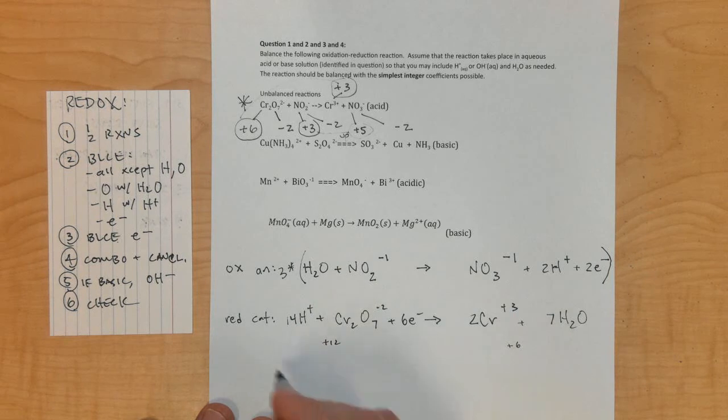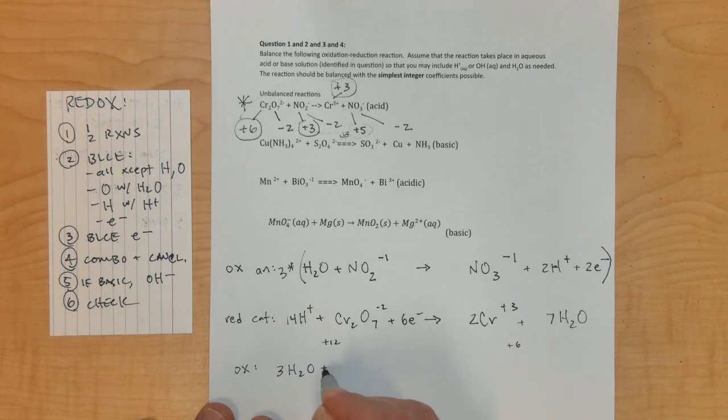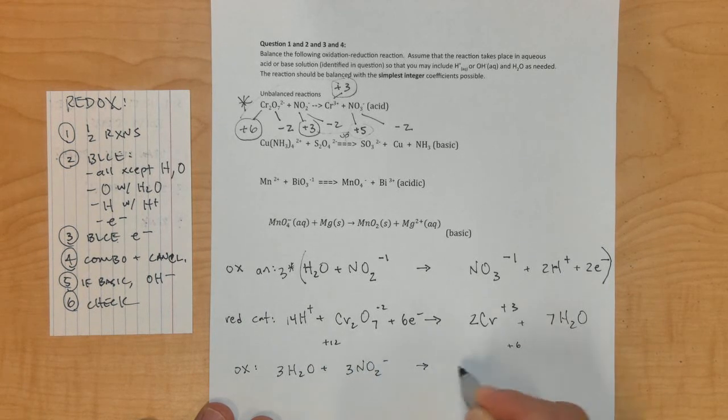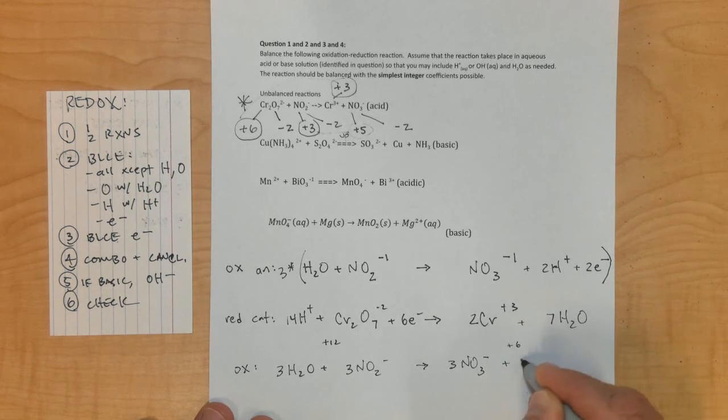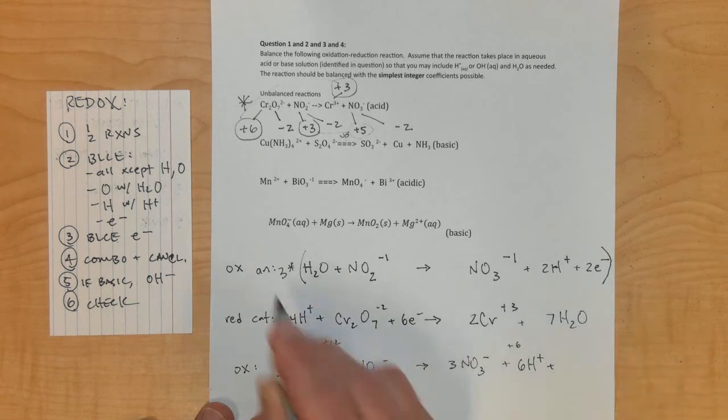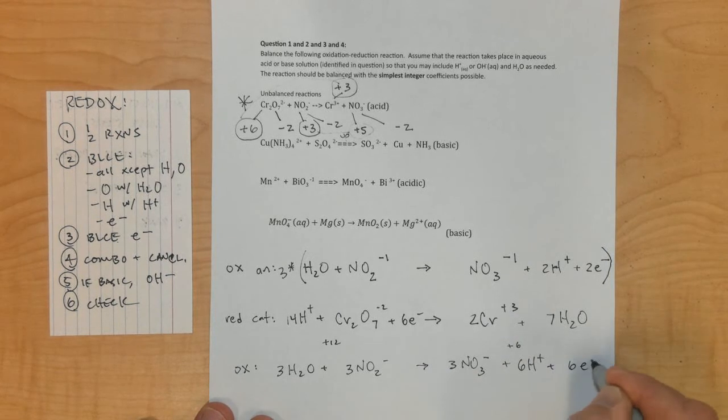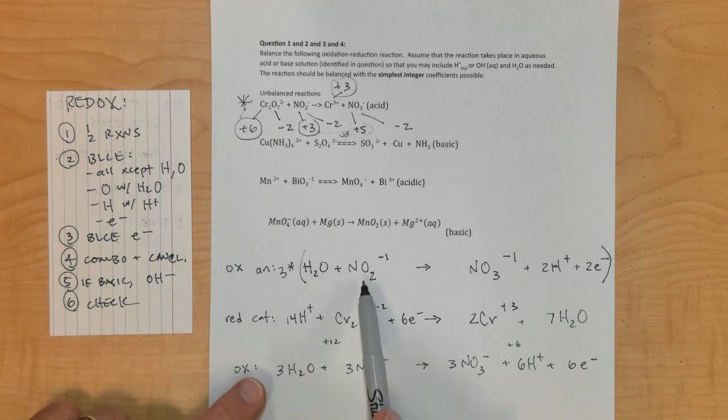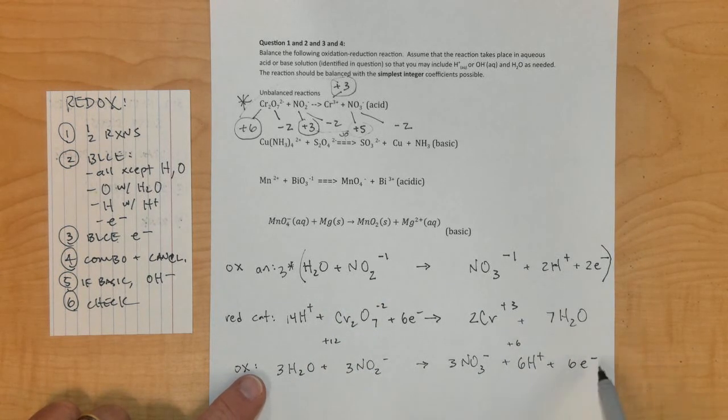When I multiply this reaction by 3, I'm going to get 6 electrons over here, which will cancel these 6. Distribute the 3 in, and be real careful. I'm going to rewrite the oxidation half reaction: 3 H2O plus 3 NO2 minuses, arrow, 3 NO3 minuses, plus 6 H pluses, plus 6 electrons. Let me double check that. 3 times 2 is 6, and 6 here.